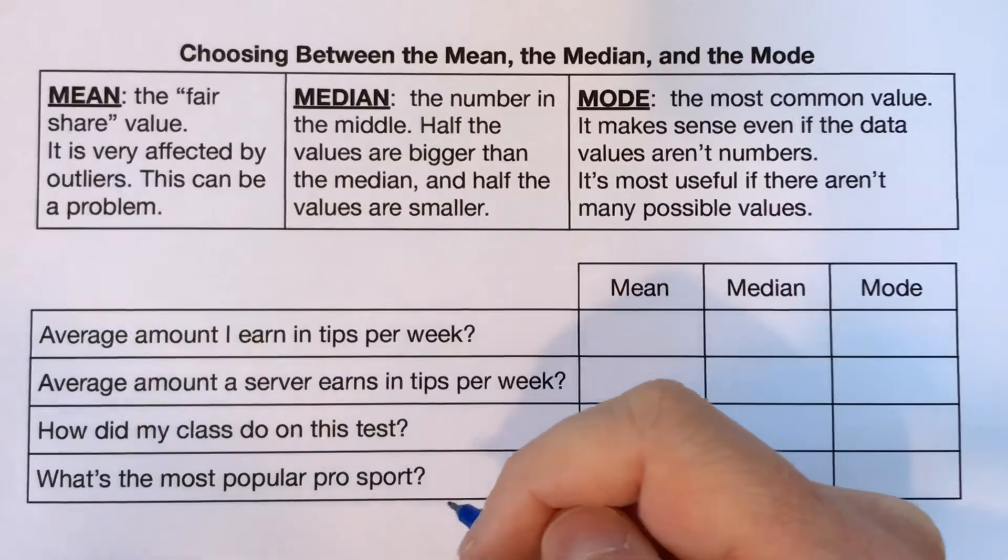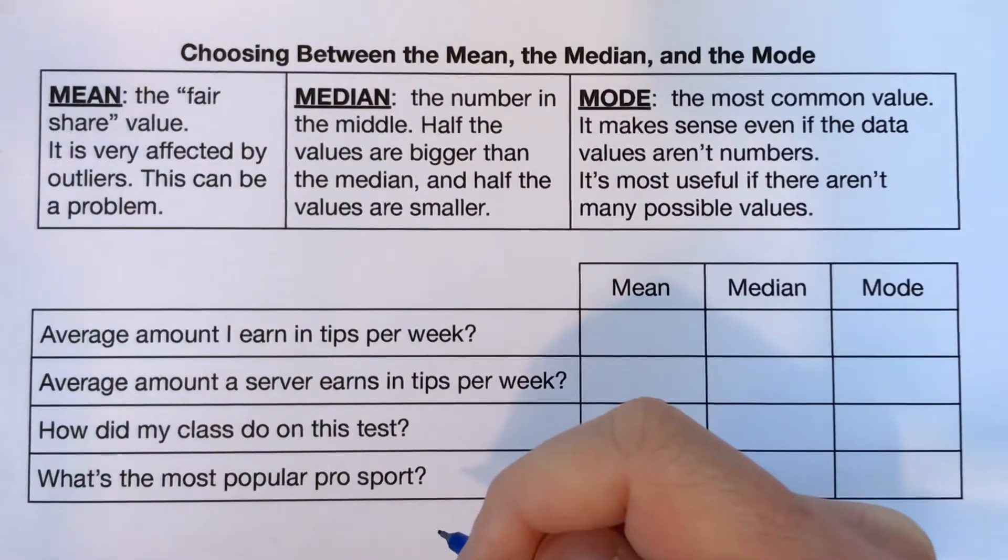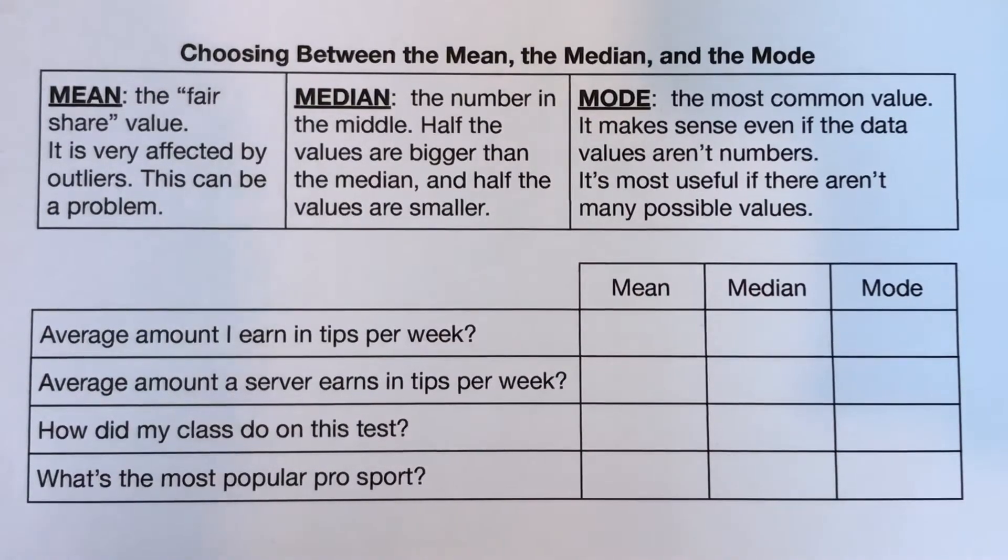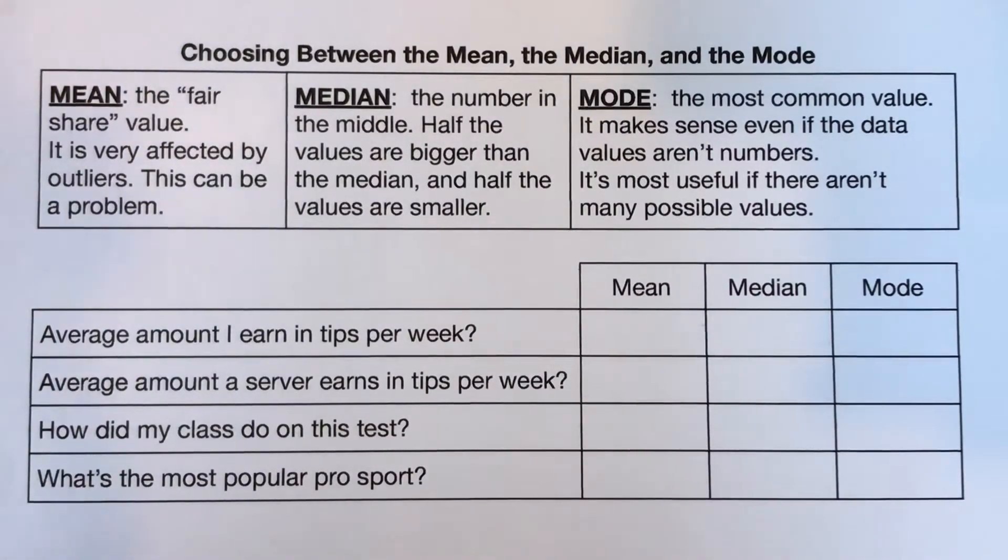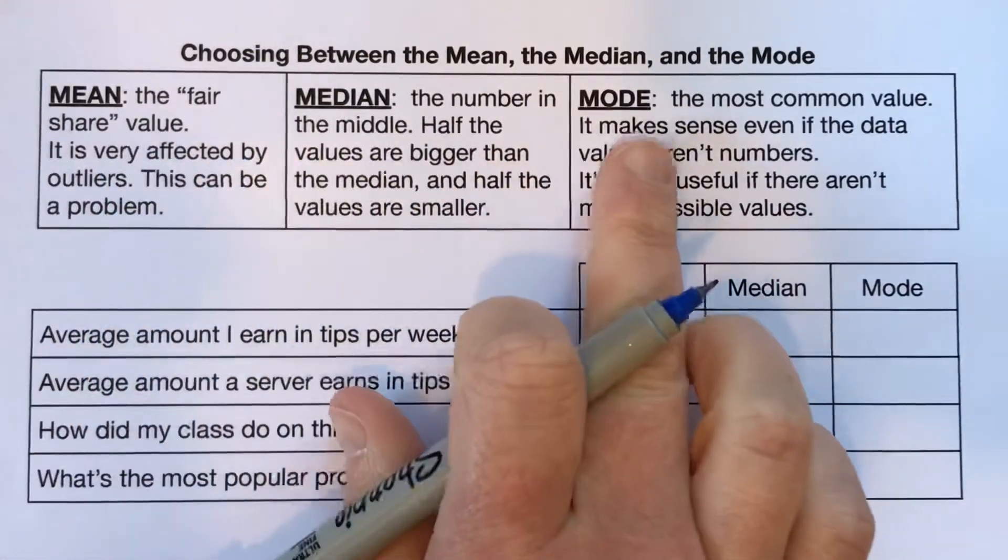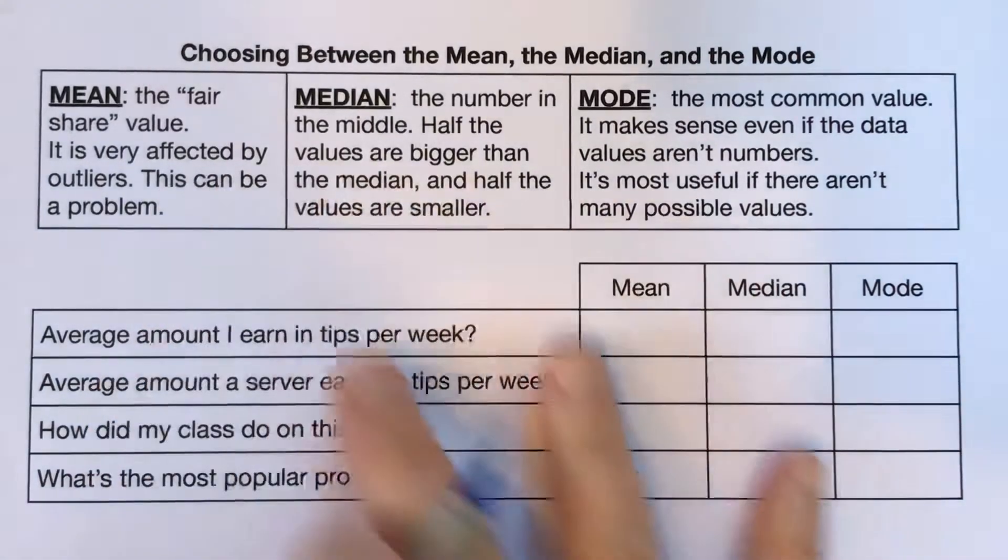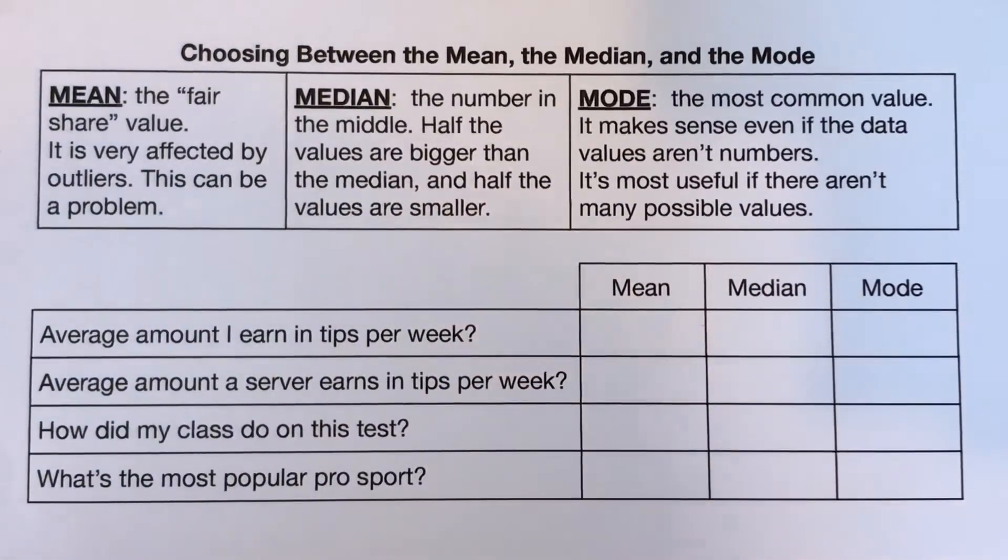So to make this decision, first of all I should say this decision often takes a lot of thoughtfulness and often there's not a clear answer. Sometimes there is, sometimes there's one of these that really doesn't really make sense, isn't really meaningful, but often two different ones could be a really good measure of central tendency.